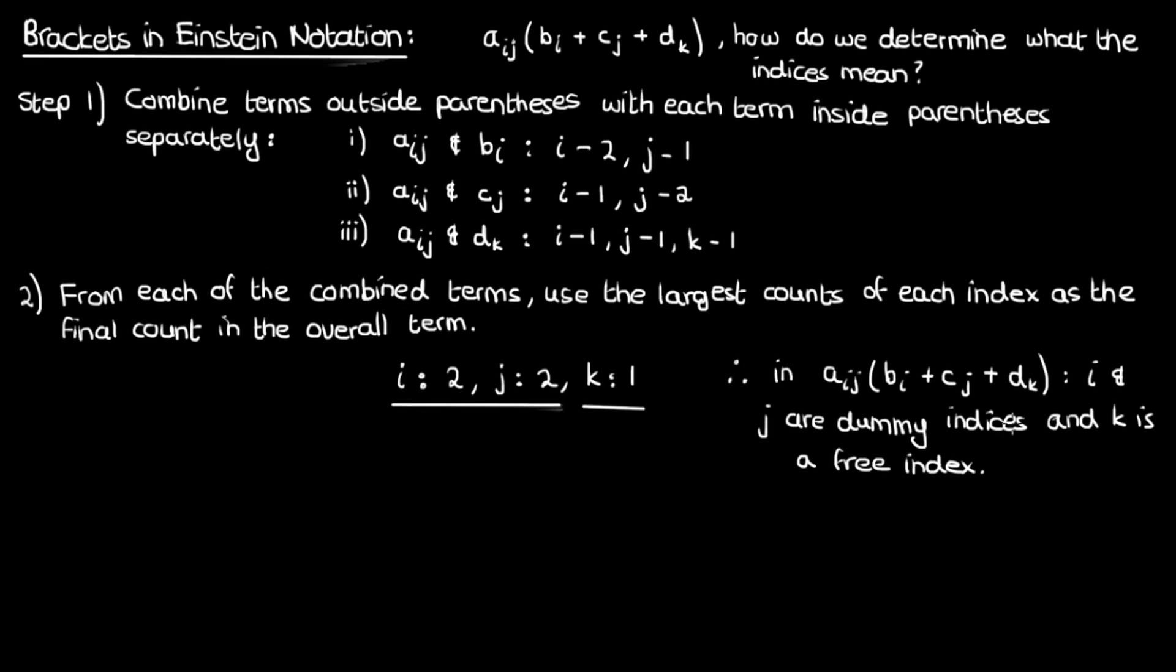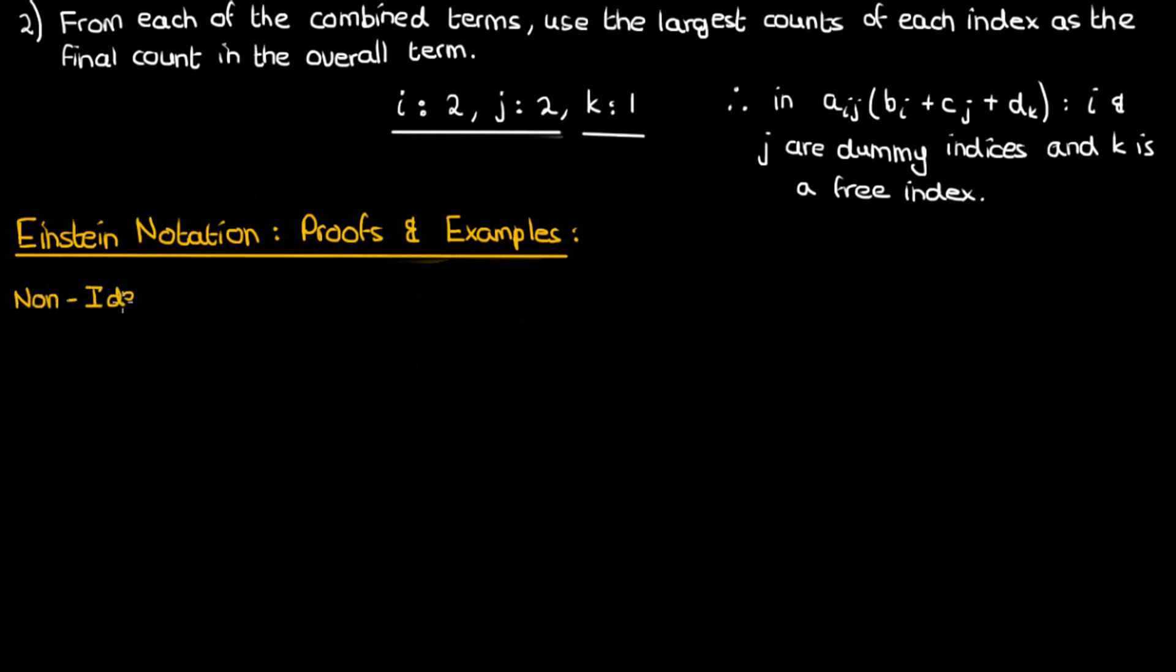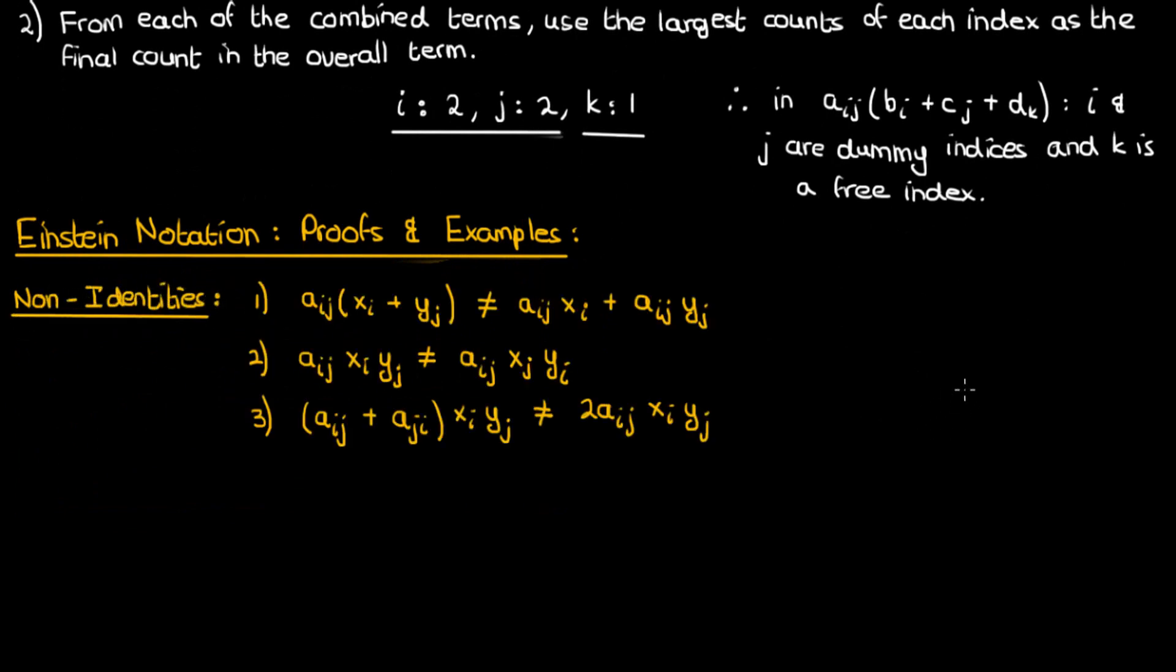Let's now solidify our understanding of Einstein notation with some practice examples and light proofs. There are three major non-identities that come up in Einstein notation, and I've listed all of them here. Now, I'm not going to rigorously prove these, but I will explain why these non-identities are true, starting with the first non-identity.